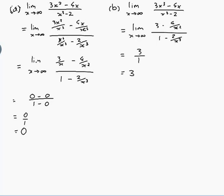So it seems that when the biggest power on the top and the bottom is the same, the limit comes out to be the ratio of the leading coefficients of those powers.